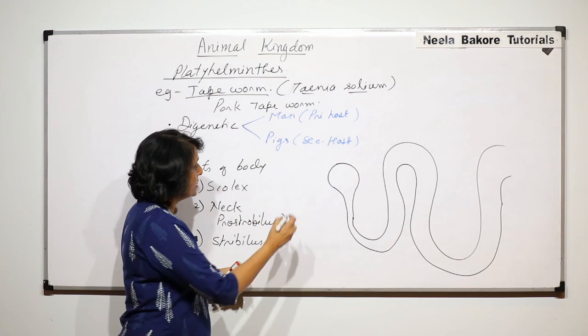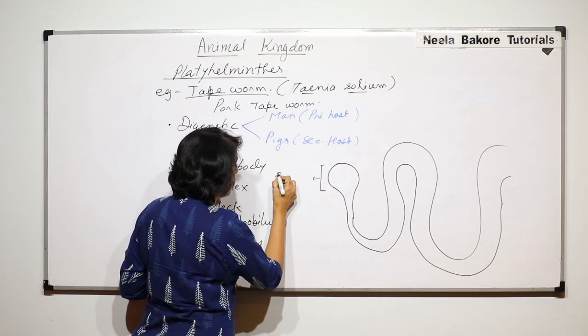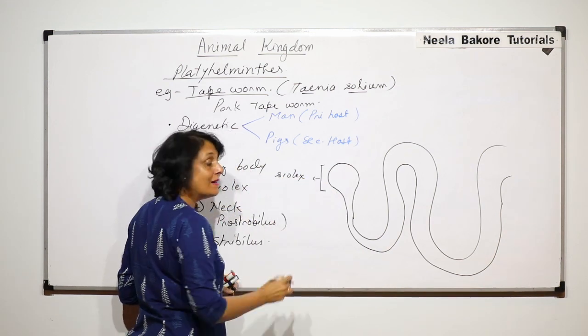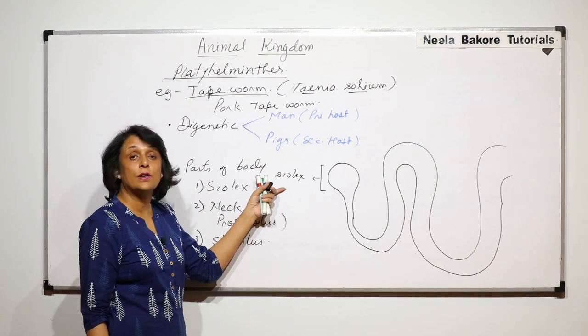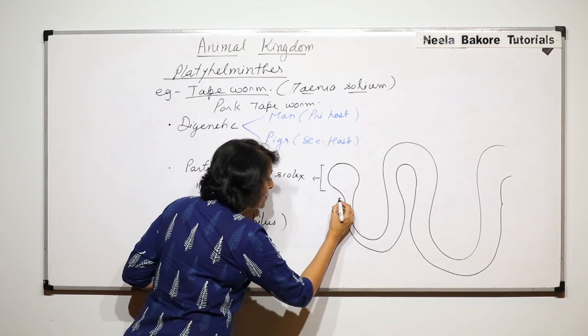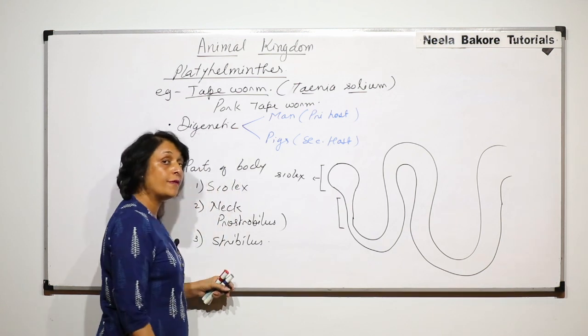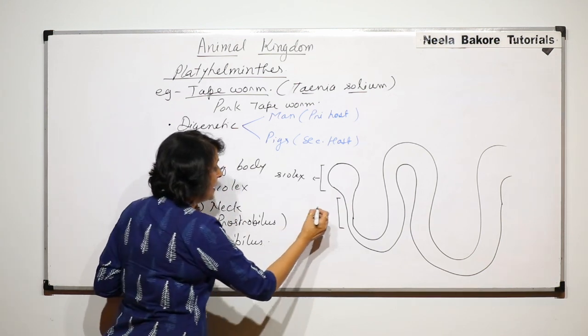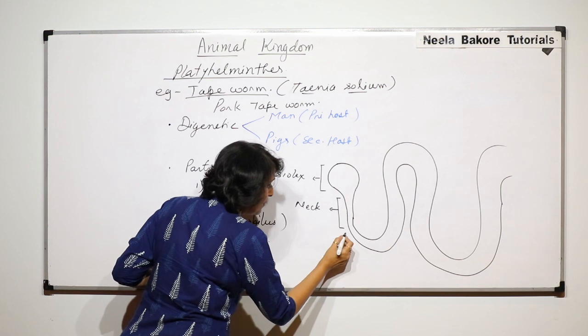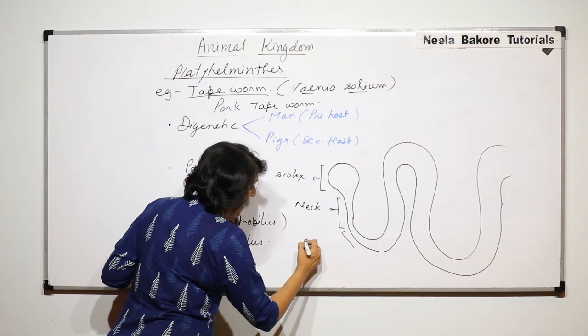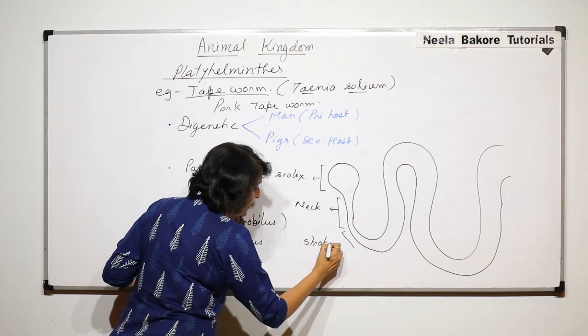In the neck region, let us label this part, this is the scolex which is head-like and we will draw the structures which are here. This part where we do not find any kind of segmentation is the neck region. And after neck the complete part is the strobilus.